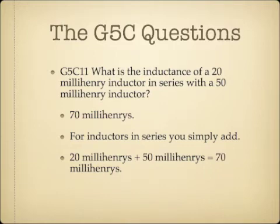What is the inductance of a 20 millihenry inductor in series with a 50 millihenry inductor? The answer is 70 millihenries. For inductors in series, you simply add them, just like resistance in series: 20 millihenries plus 50 millihenries equals 70 millihenries.